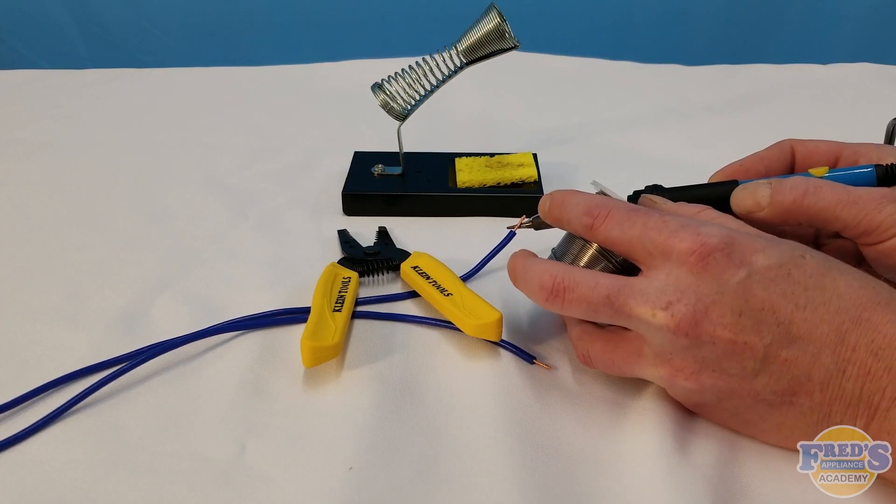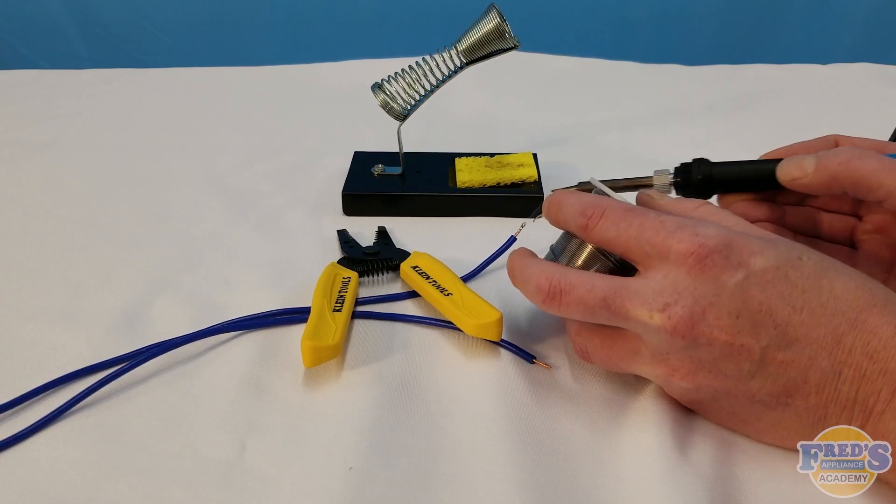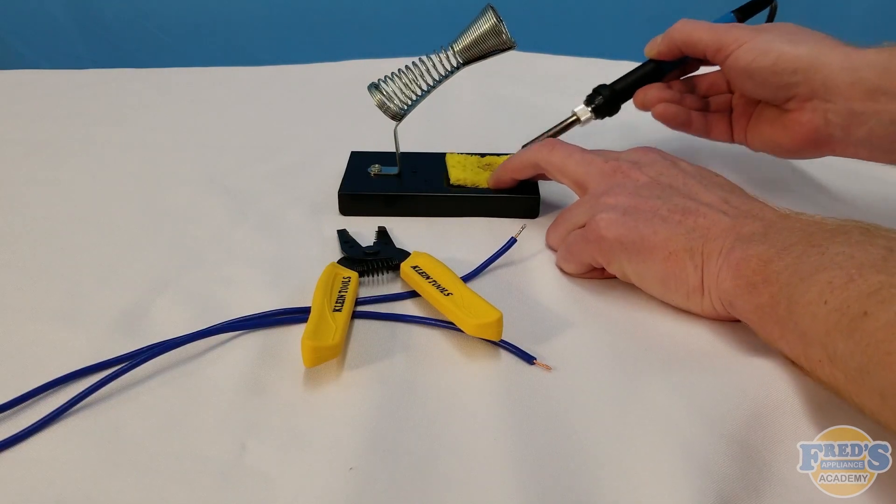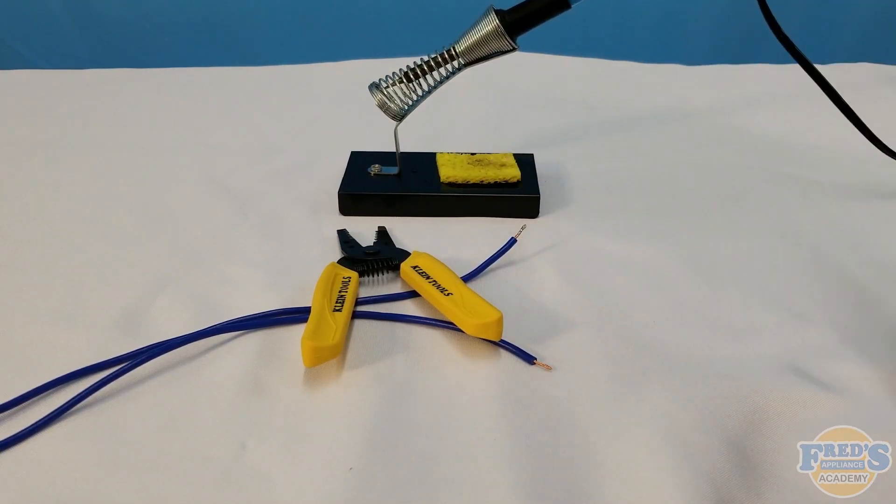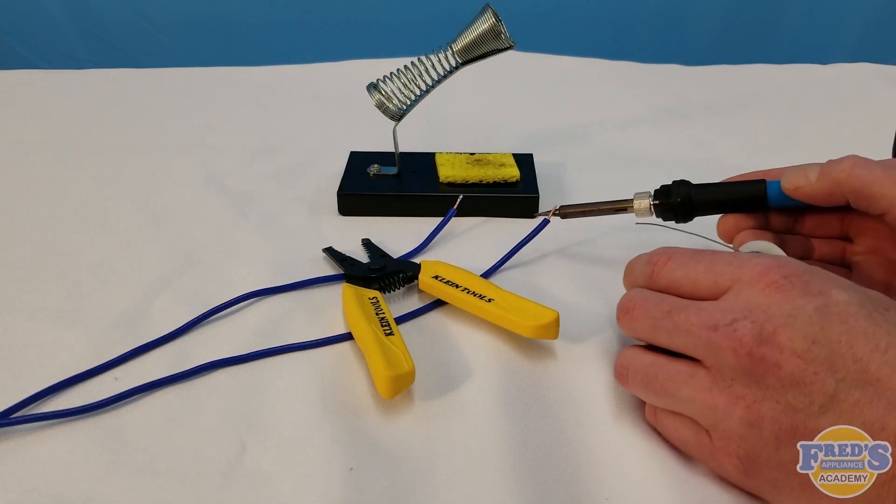You can also see that I'm using the wire strippers to help stabilize that wire. It's just nice to have an extra set of hands sometimes. Only a small amount of solder is needed to be applied to each end of the wiring and you'll see the copper turn from a copper color to a nice silver shiny color.